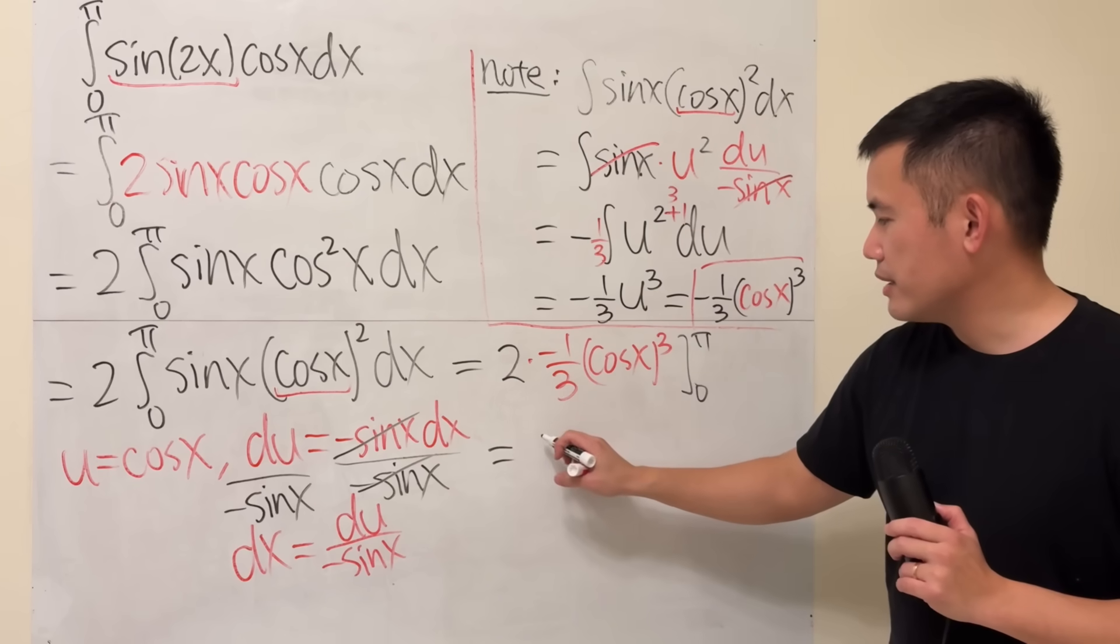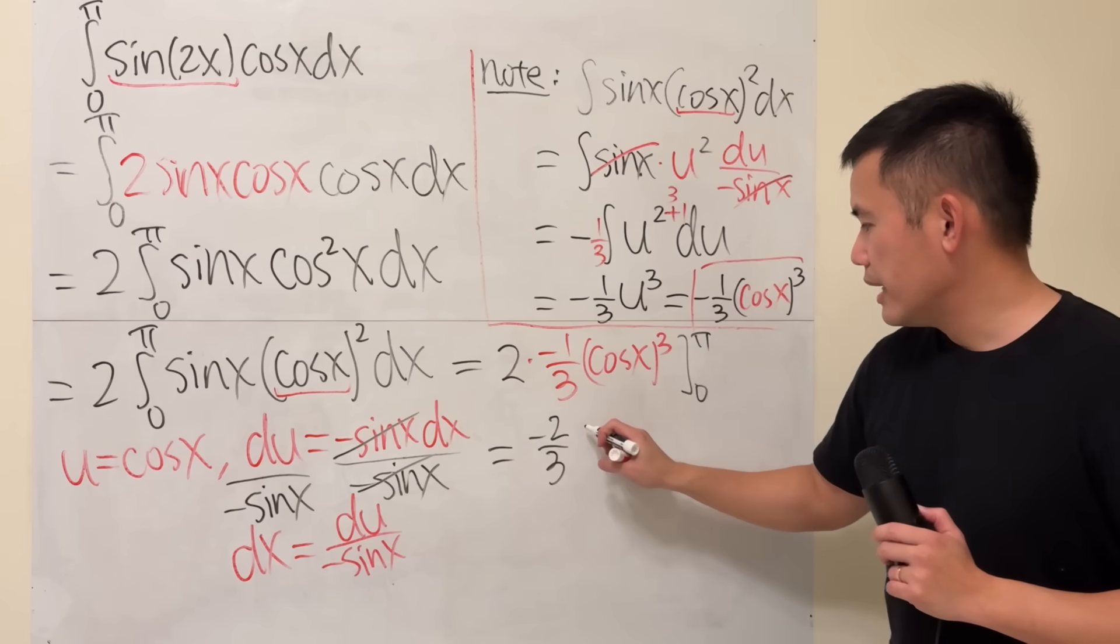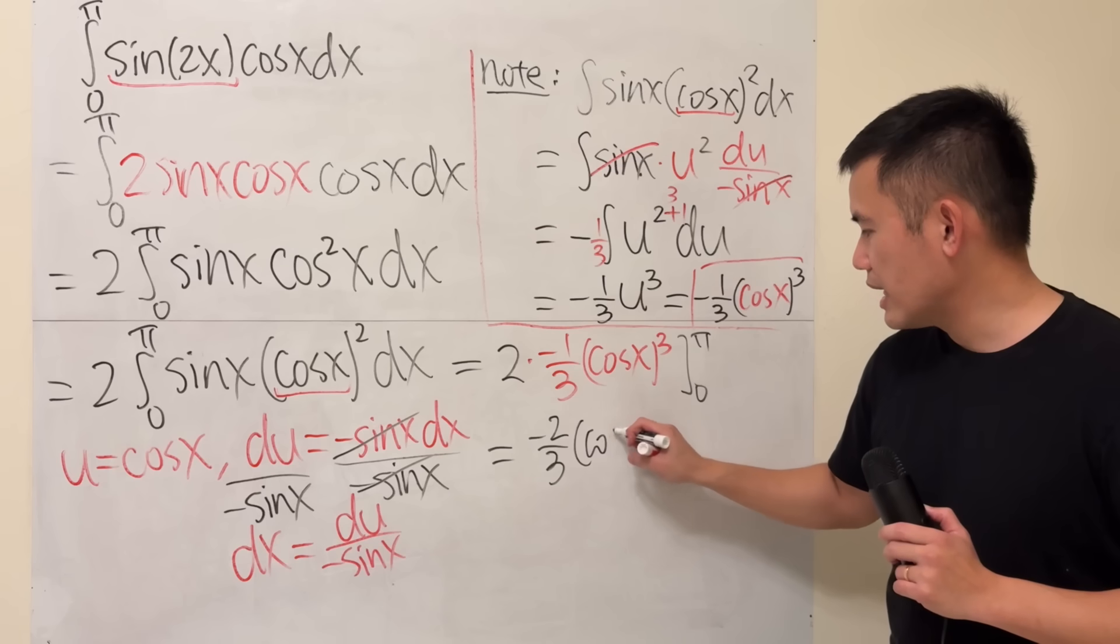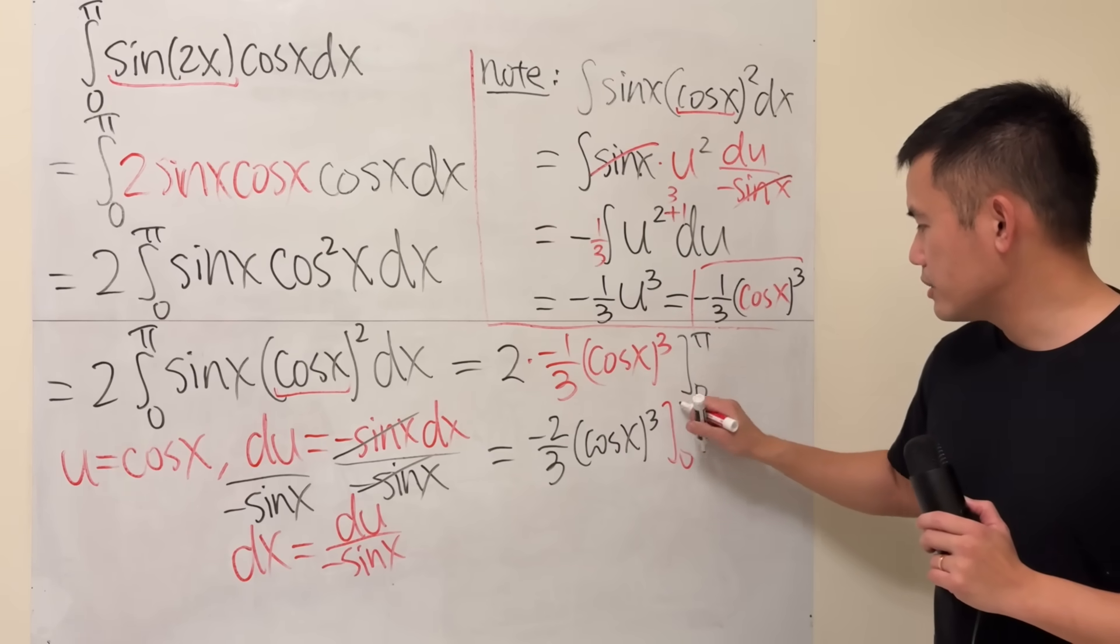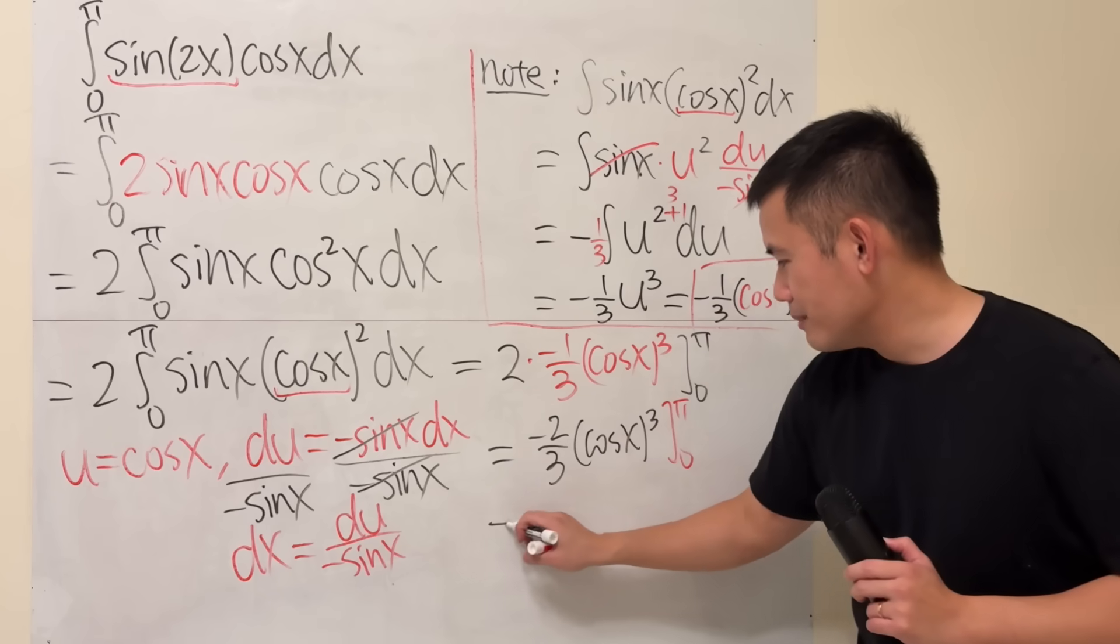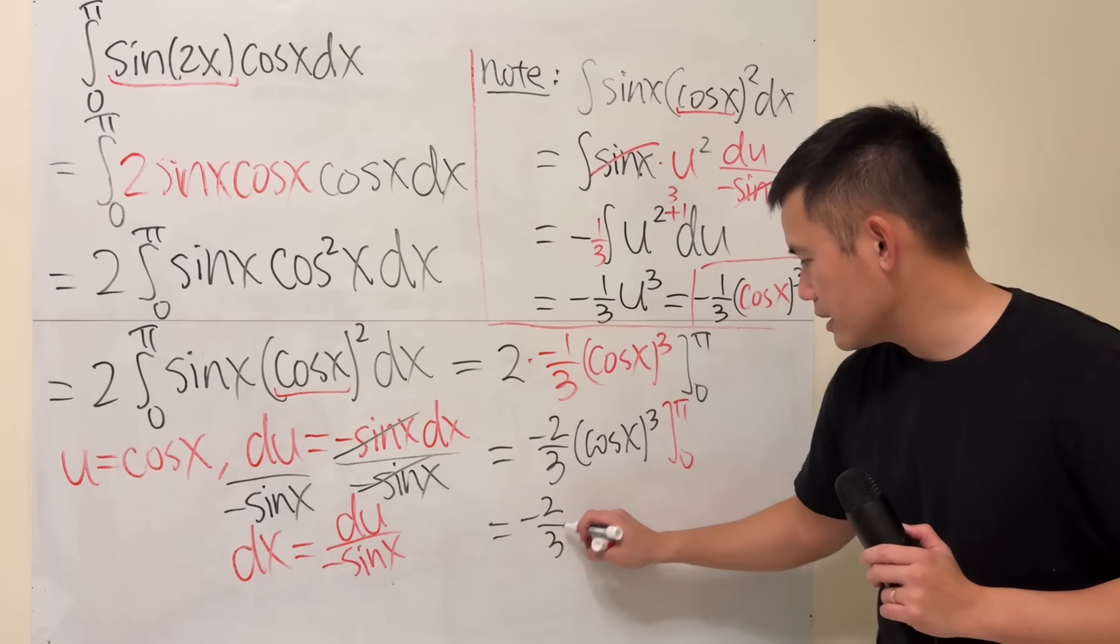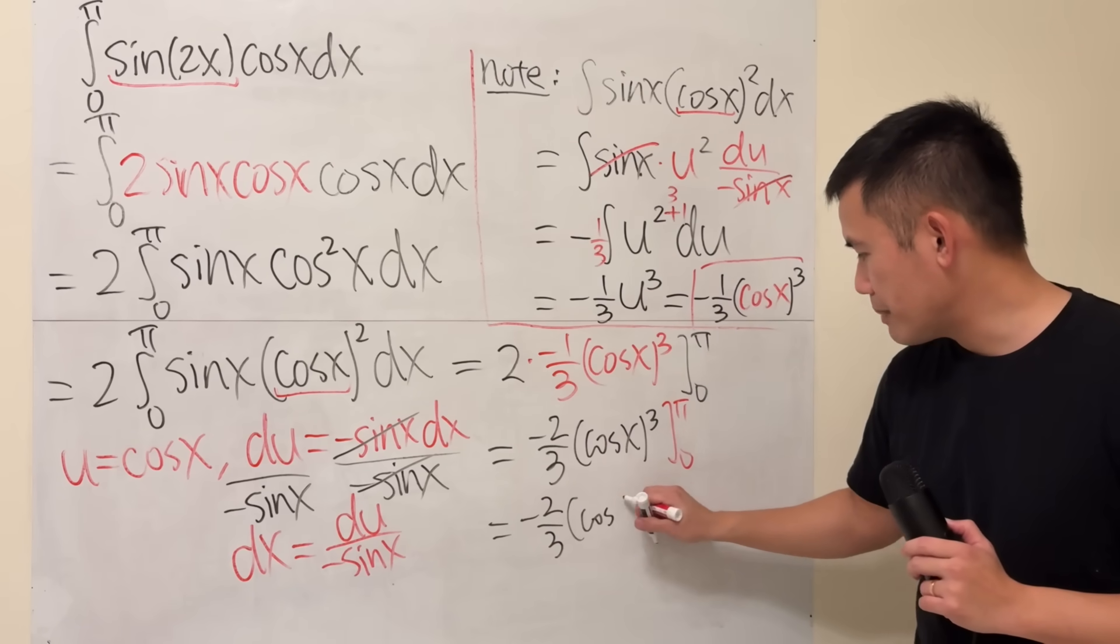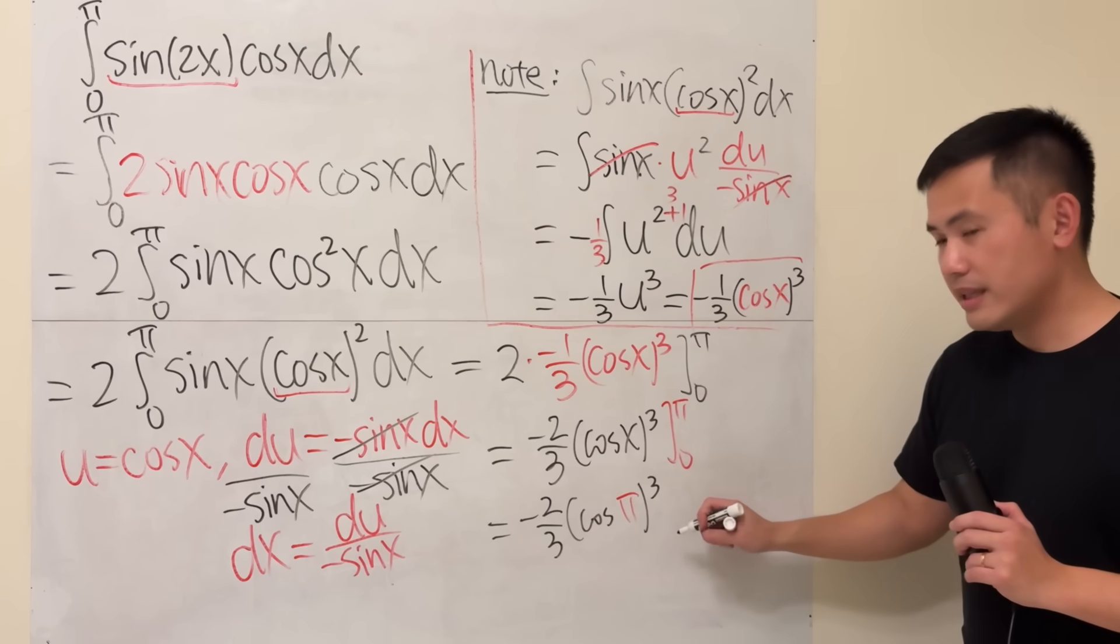So this right here is negative 2 third. And then this really means cosine x to the third power, and then plug in 0 pi. Plug in pi first, sorry, plug in pi first. So cosine pi, and then third power that.